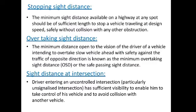First, stopping sight distance: the minimum sight distance available on a highway at any spot should be sufficient — sufficient length to stop a vehicle traveling at design speed safely without collision. So the vehicle can stop before colliding with any obstruction.